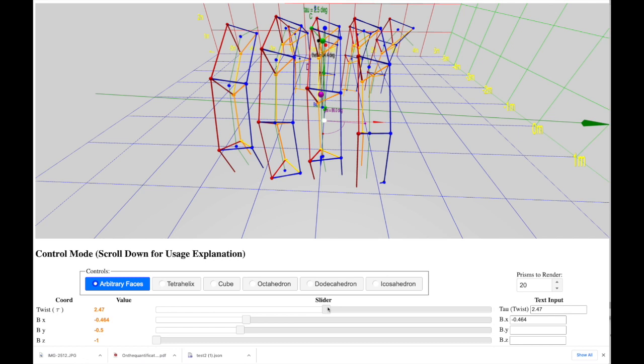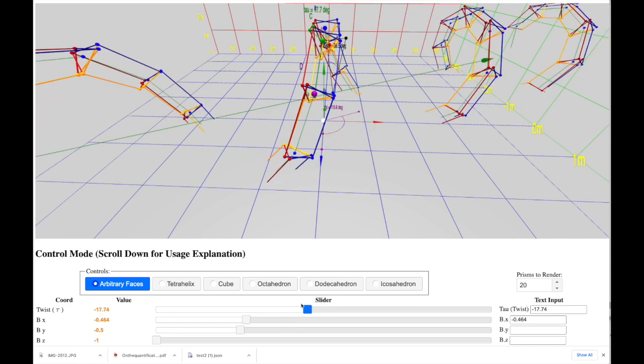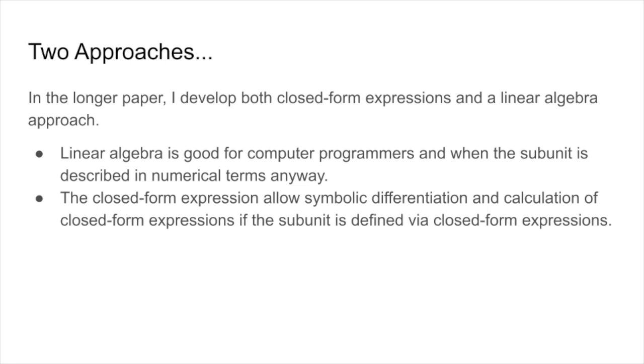In the longer paper I actually developed the math for how to do this twice. Once using the linear algebra which is typically used by graphics programmers and computer programmers to compute things, and secondly as closed form expressions. And you might ask why would you do that? Well, if the face angles and the shapes are coming to you numerically anyway, you might as well use linear algebra to compute them which is very convenient for computer programmers. However, that's terrible for mathematicians because it precludes the possibility of finding closed form expressions for something. And so I personally believe having the closed form expressions of the helix properties is very important.